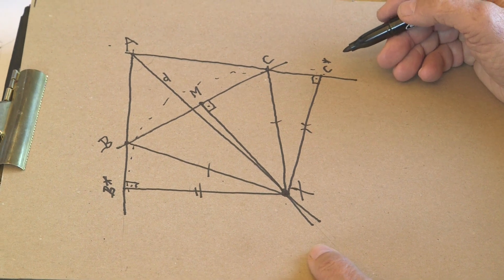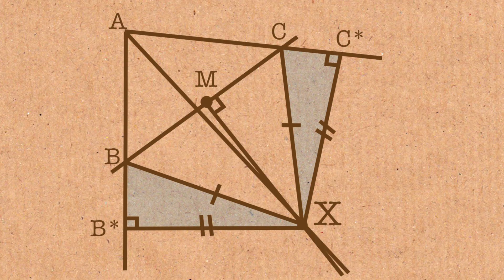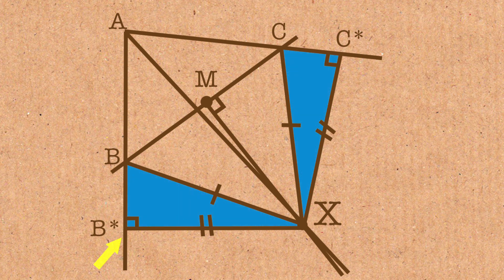Now we focus on these two small triangles, and here we have a triangle with a right angle. Adjacent to the right angle we have this double marked line XB star, and here we have a right angle, and adjacent to the right angle we have this double marked line XC star, and we know these two lines are the same length.